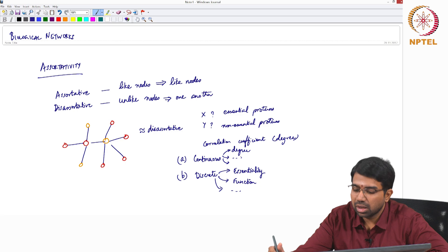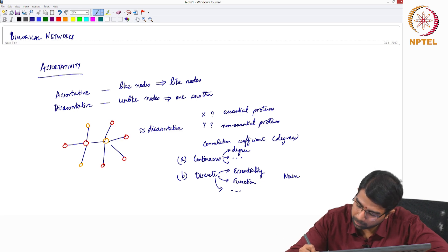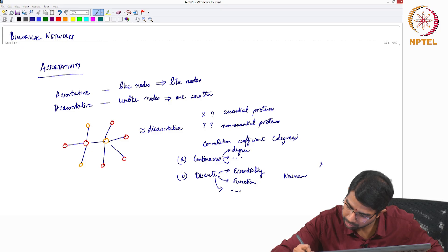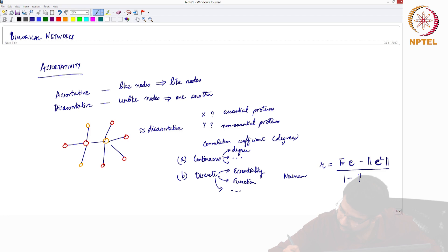For a discrete case, Newman has proposed a formula which goes something like R equals trace of E, this is a matrix, minus—I will tell you what this symbol means. This means sum of all the elements in the matrix.